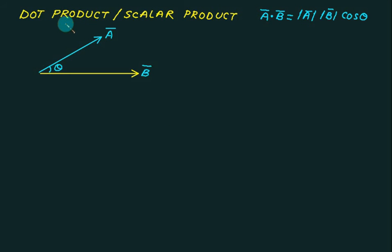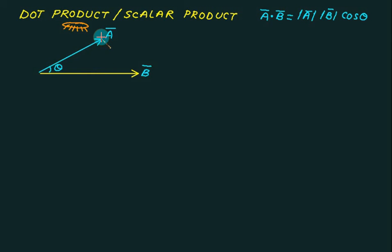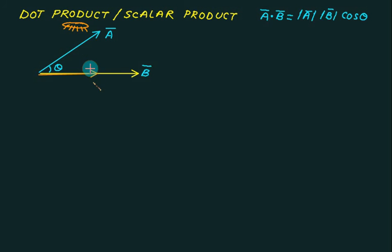Imagine a light source here — light falls on this vector, and the shadow of a bar falls on b bar like this. You can think of this as your eye projecting a bar onto b bar. This is called the projection of a bar on b bar. Projection is also called the component.